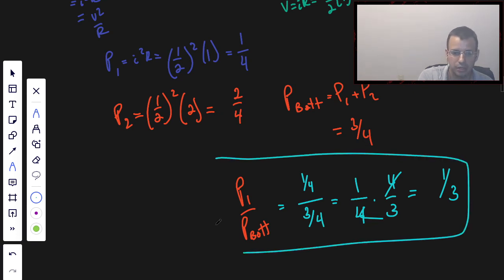1 third of the power generated, created by the battery, delivered by the battery, is dissipated in the internal resistance of said battery.